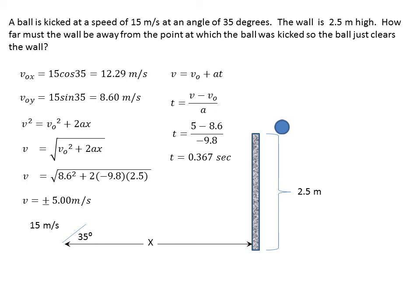Now that we have the time, we can figure out what the distance is. You use x equals v naught t plus 1 half a t squared, but of course a is 0, so 1 half a t squared is 0. We can figure out the distance by taking our v naught, which is our x velocity, 12.29, multiply it by the time, and we get a distance of 4.51 meters, which is our answer.